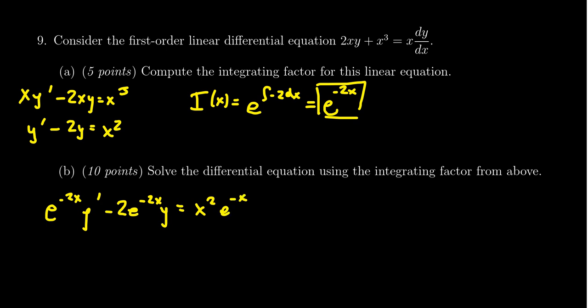On the left-hand side, it's going to factor very nicely — you can skip a lot of the steps there. The left-hand side looks like a product rule derivative, so when you take the integral of both sides, you're integrating with respect to the product e to the negative 2x times y.